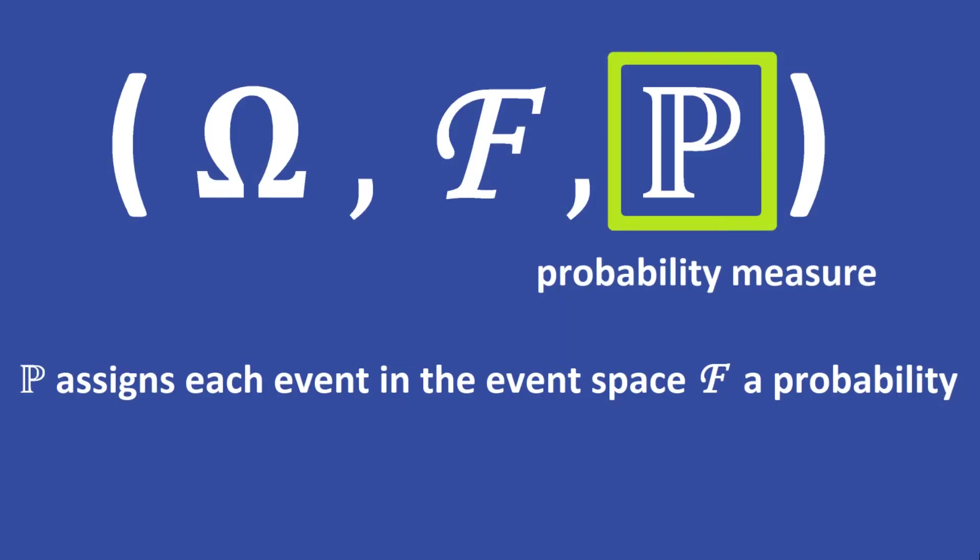In this video I will explain the last element of a probability space, the probability measure P. A probability measure assigns each set in the sigma algebra F a probability, which is a number between zero and one.